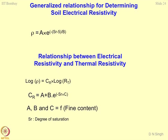Based on these studies, relationships were developed for determining electrical resistivity. This is the generalized form — electrical resistivity is a function of saturation. There is also a relationship between electrical resistivity and thermal resistivity. What it indicates is that both resistivities are equivalent to each other except for some multiplication factor.